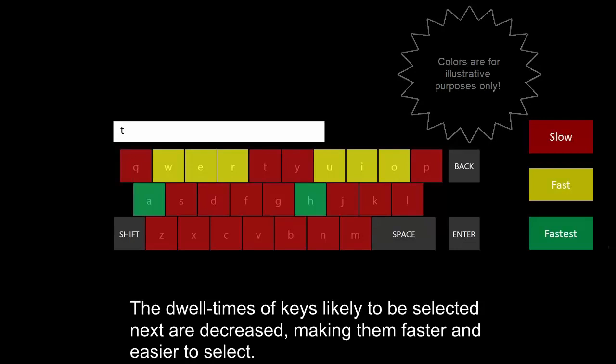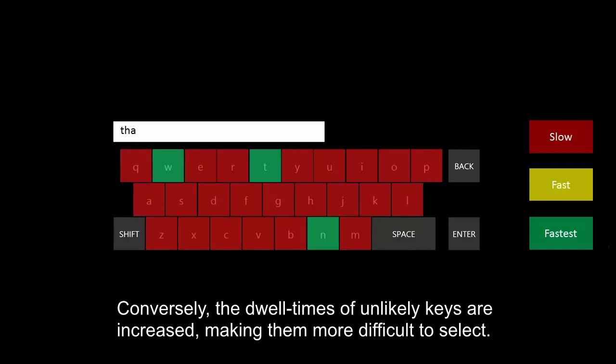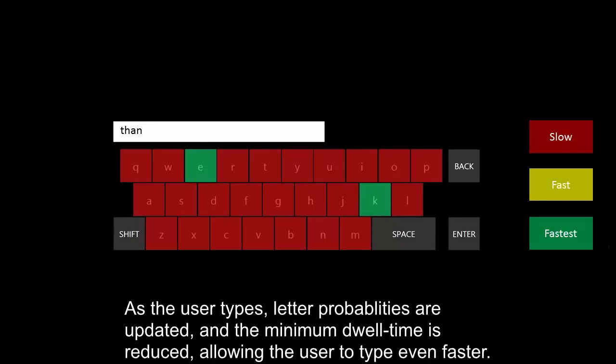Conversely, the dwell times of unlikely keys are increased, making them more difficult to select. As the user types, letter probabilities are updated and the minimum dwell time is reduced, allowing the user to type even faster.